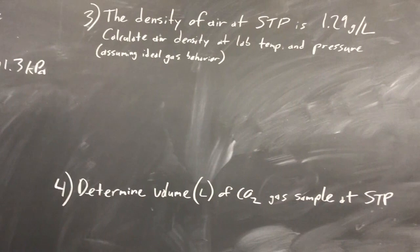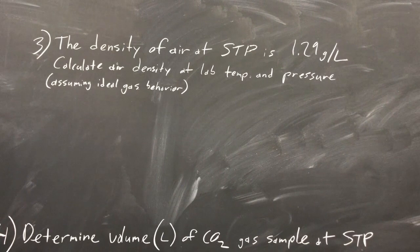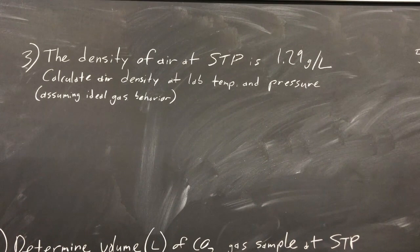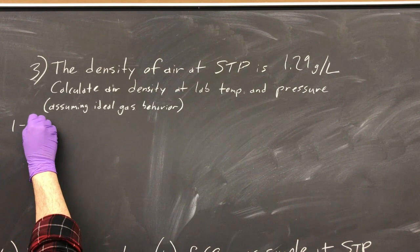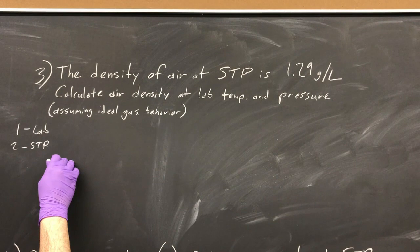So then our first step, doing calculations, we have to find the density of air at STP, which is 1.29 grams per liter. We have to calculate the air density at lab temperature and pressure. So labeling, I'll do one at lab and two at STP.